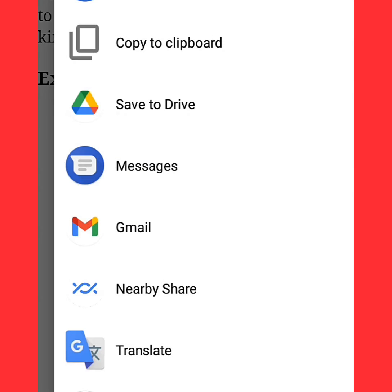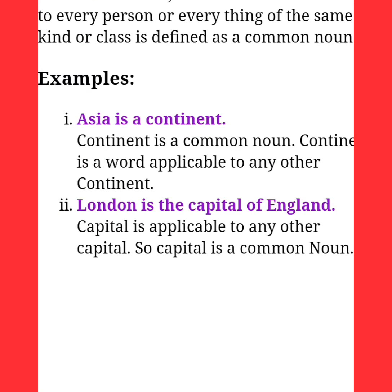Now let's talk about common nouns. A common noun is a word which denotes something common to every person or everything of the same kind or class. For example, Asia is a continent — 'continent' is a common noun because it is applicable to any other continent.